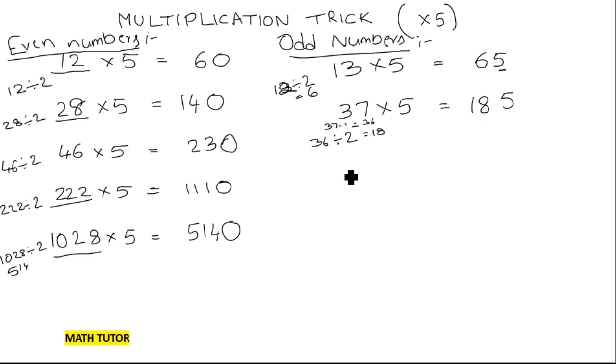Let us take one more number. 289 times 5. So, here, this is an odd number. So, in the 1's place, 5 will come. And then, what we have to need to do? We have to make it 1 less. Right? So, 289 minus 1. It will become 288. Then, you have to half it. That is divided by 2. So, what is the answer? 144. This 144 will come to the left side of 5. That is 144. So, the answer is 1445.